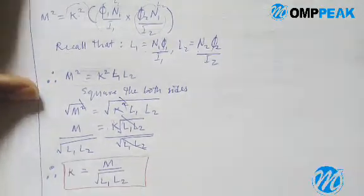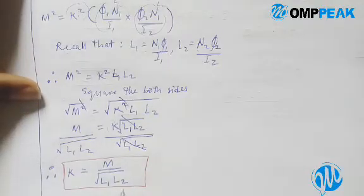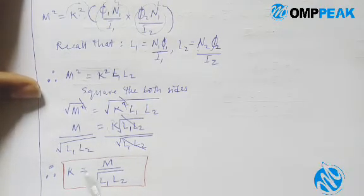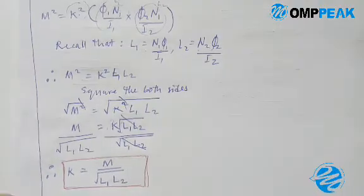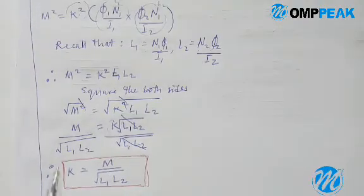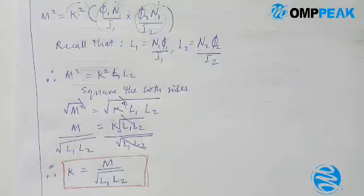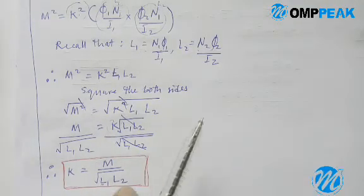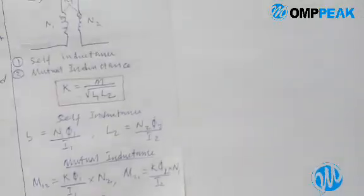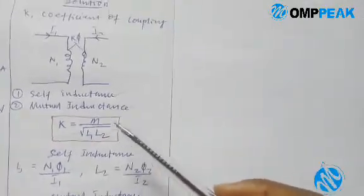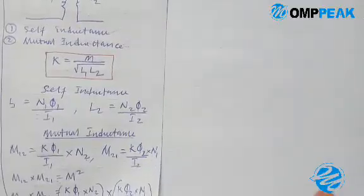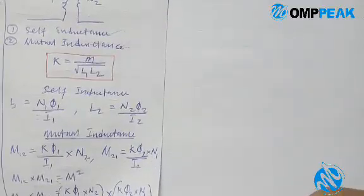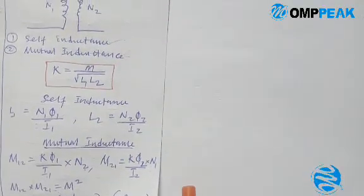k equal to M over root L1·L2 is what we've been looking for — this is what we derived. Don't forget the question said: show from the first principle that coefficient of coupling is k equal to M over root L1·L2. So this is from the first principle, starting from self inductance and mutual inductance. Thank you — please like, subscribe, share and comment below.